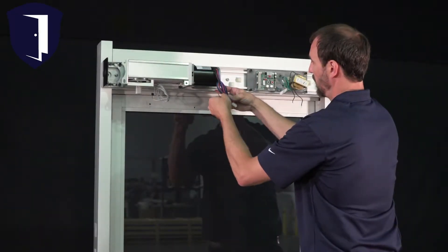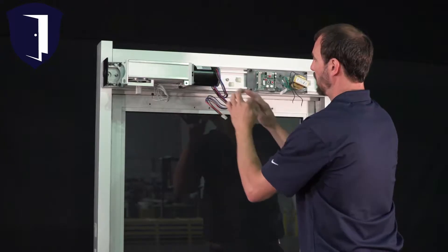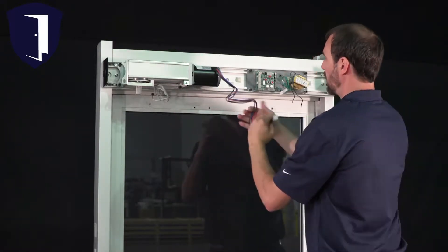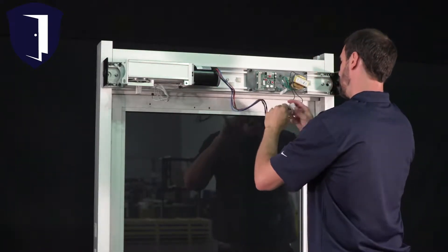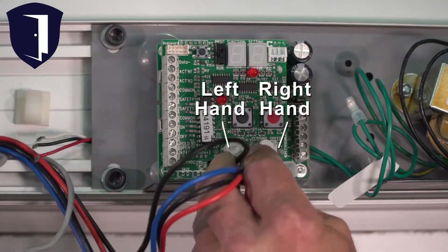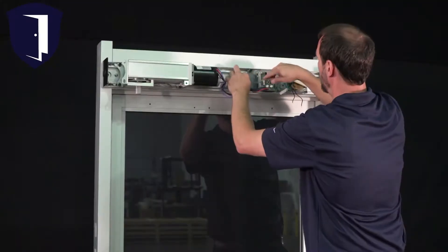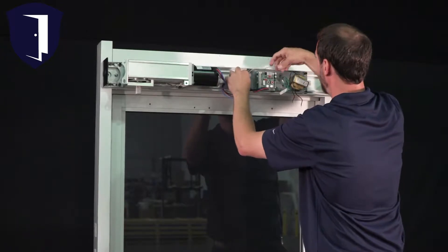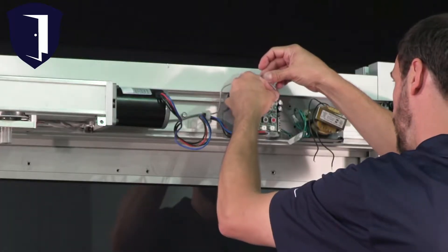Next, make the motor harness connection between the motor and the control board. For our left-hand installation, we'll connect the wiring harness to the left 4-pin connector. Plug in the back check and latch wire lead to the 3-pin connector on top of the board.